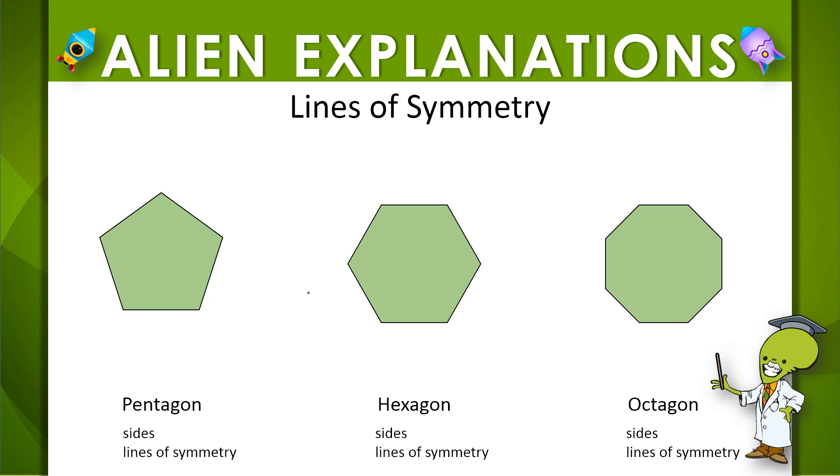Let's see if there's a relationship between the number of sides and the number of lines of symmetry. So in a pentagon we have 1, 2, 3, 4, 5 sides. In a hexagon we have 1, 2, 3, 4, 5, 6 sides. And in an octagon we have 1, 2, 3, 4, 5, 6, 7, 8 sides, all the same length.